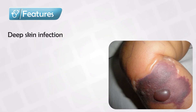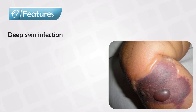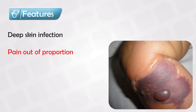Necrotizing Fasciitis is a deep skin infection. This infection, unlike other sources, usually starts from below. The cause can be in the blood and it reaches the skin. And because of this, the patient will have pain out of proportion. The skin will be diseased, but the superficial area will be completely healthy.